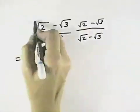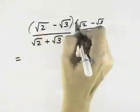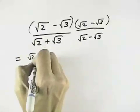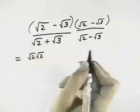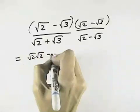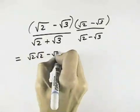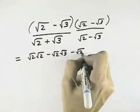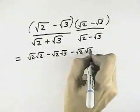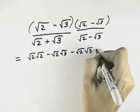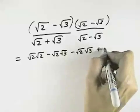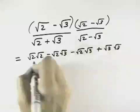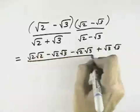So on the numerator, I've got square root of 2 times square root of 2. Then outer is minus square root of 2 times square root of 3. Inner is minus square root of 2 times square root of 3. And last will be plus square root of 3 times square root of 3, because there's two negative signs.